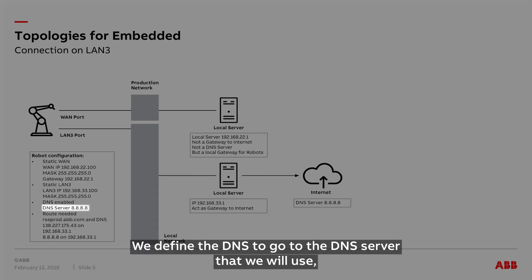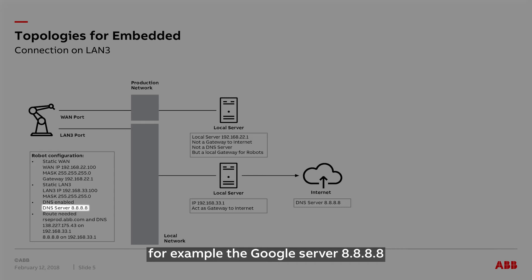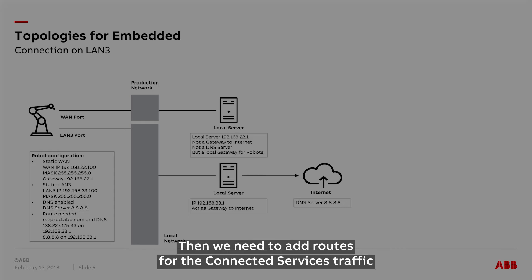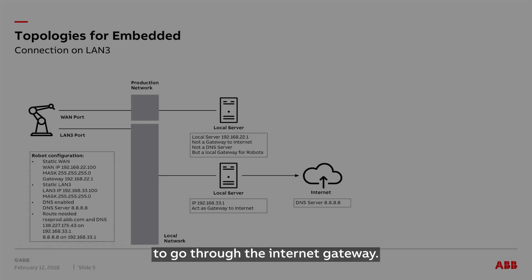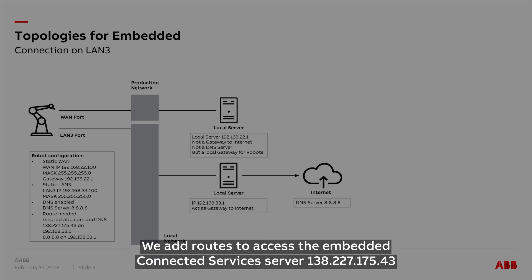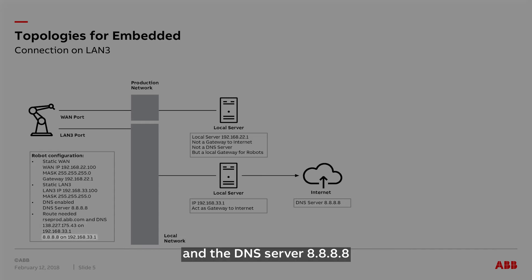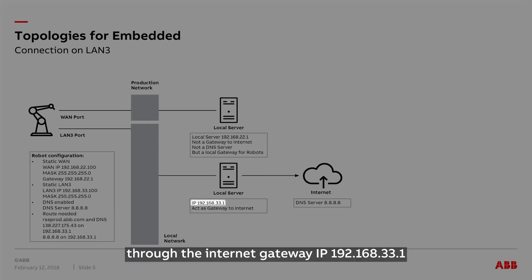We define the DNS to go to the DNS server we will use, for example the Google server 8.8.8.8. Then we need to add routes for the connected services traffic to go through the internet gateway — routes to access the Embedded Connected Services server 138.227.175.43 and the DNS server 8.8.8.8 through the internet gateway IP 192.168.33.1.